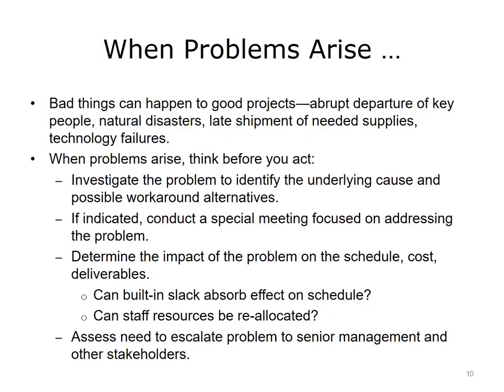When unexpected problems do arise — such as the abrupt departure of key people, natural disasters, late shipment of needed supplies, or technology failures — you must be prepared to handle them in a systematic way. First, investigate the problem to identify the underlying causes and determine possible workarounds or solutions. Bring together your project team members to discuss the problem and brainstorm fixes. Determine the impact on the schedule, cost, and deliverables. Consider whether current staff resources can be reallocated, and assess if you need to bring the problem to senior management, as critical problems may require the input of your senior leaders.